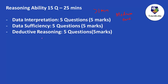In data interpretation, it does not always mean there will be a bar graph, pie chart, or line chart. In the case of Infosys, data can be given in paragraph format, and then 5 questions will be asked based on that data. There is also a chance you could get a bar chart, pie chart, or line chart, but be prepared for paragraph-based data as well.